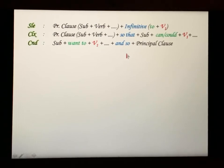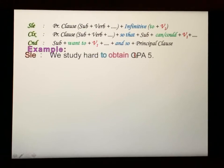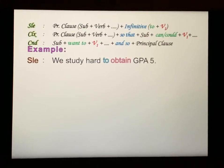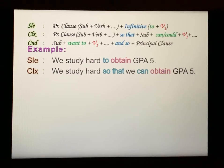Let's see an example. Simple sentence: We study hard to obtain GPA 5. For the complex sentence: We study hard so that we can obtain GPA 5. Here we use 'so that' followed by 'can' since it's present tense.